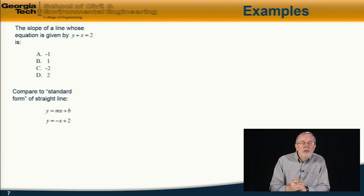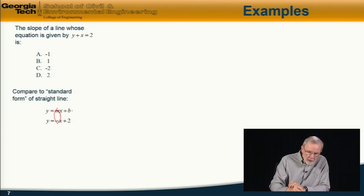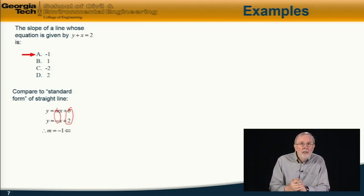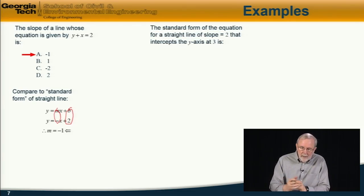In other words, in this case, y rewriting the equation, we have y = -x + 2, from which we see that m here is equal to -1, and b is equal to 2. So, the answer is the slope of the line is -1.